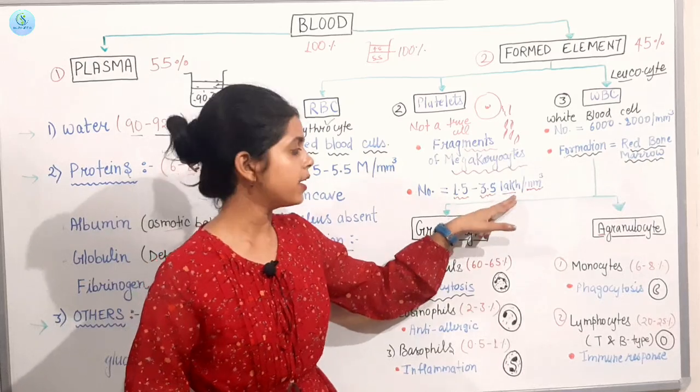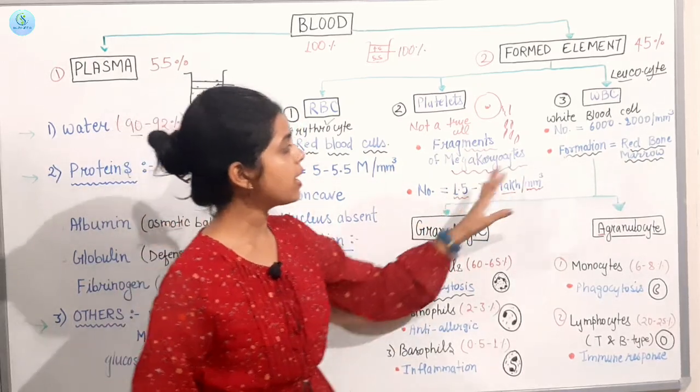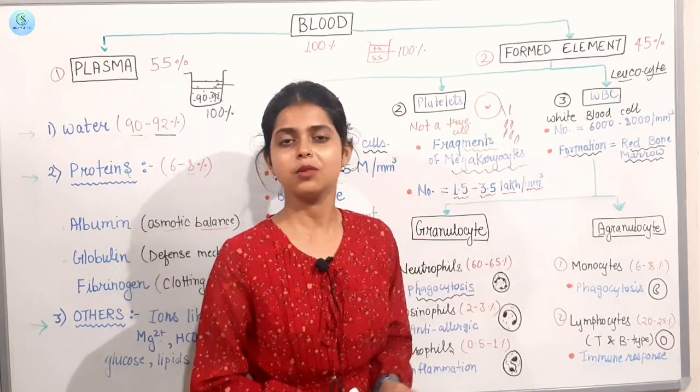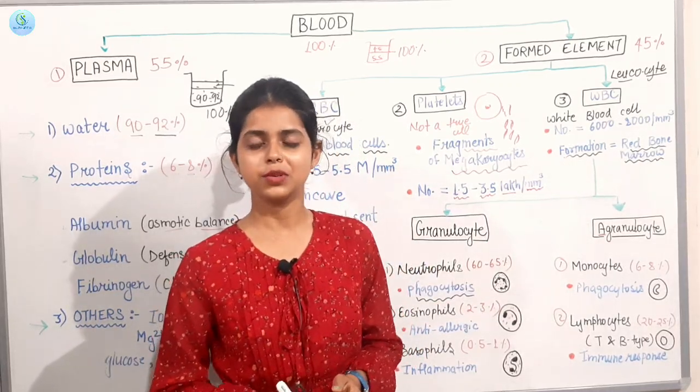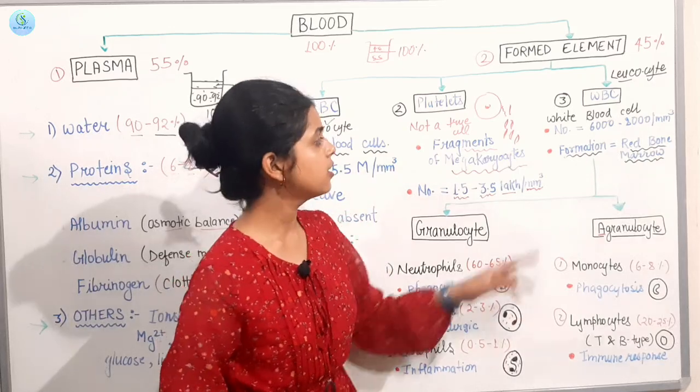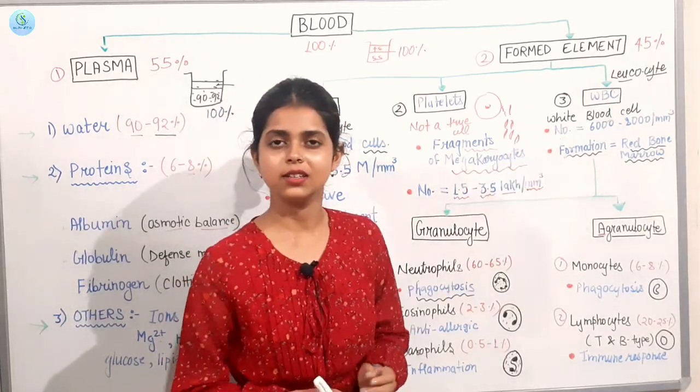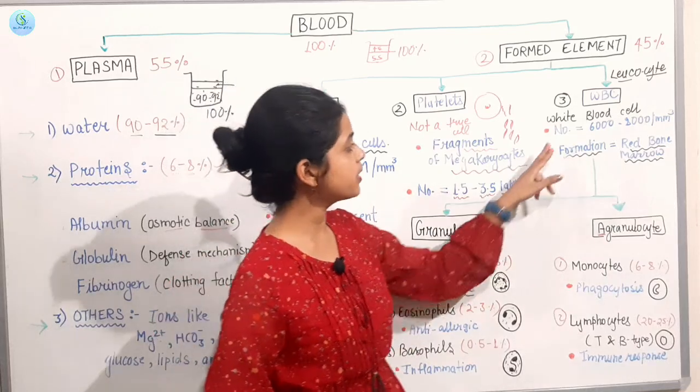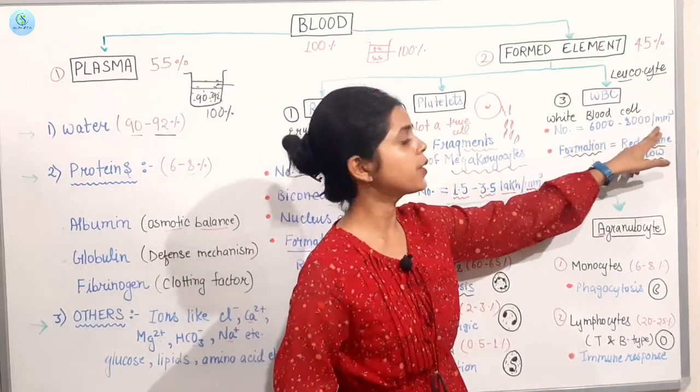1.5 million per micrometer cube. Now, here is number of cells. This number has been talked as well. We talk about WBC. WBC means white blood cells. These are white blood cells. These are leukocytes or WBC. So here it is, its number is 6,000 to 8,000 per micrometer cube.